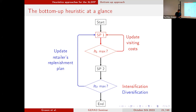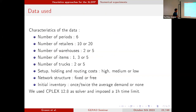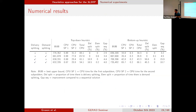With those two heuristics, we wanted to have some idea of how they perform. We checked on some instances — they may seem a bit small: just six time periods, 10 or 20 retailers, a few warehouses, a few items and trucks. We tried also the different versions with the splitting possibilities — split demand and split delivery. We used CPLEX as a solver and gave it a one-hour time limit.